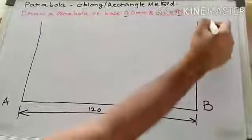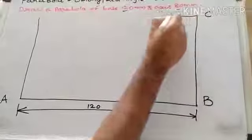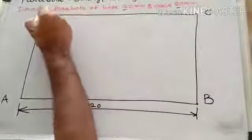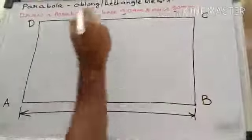So, this point is C. From C, draw a parallel line to AB. You will get a rectangle.